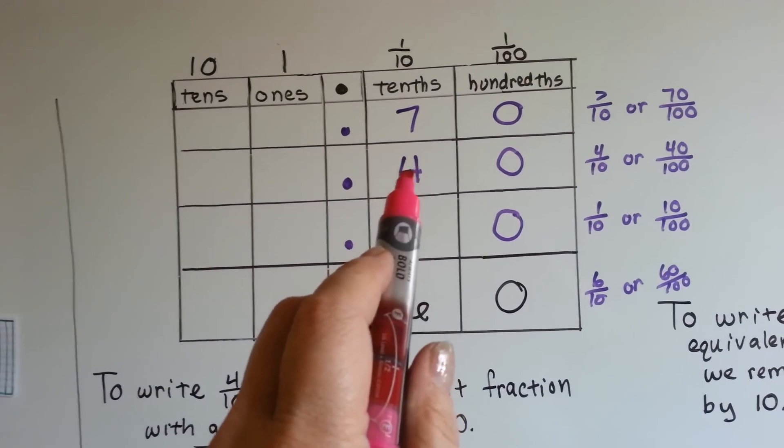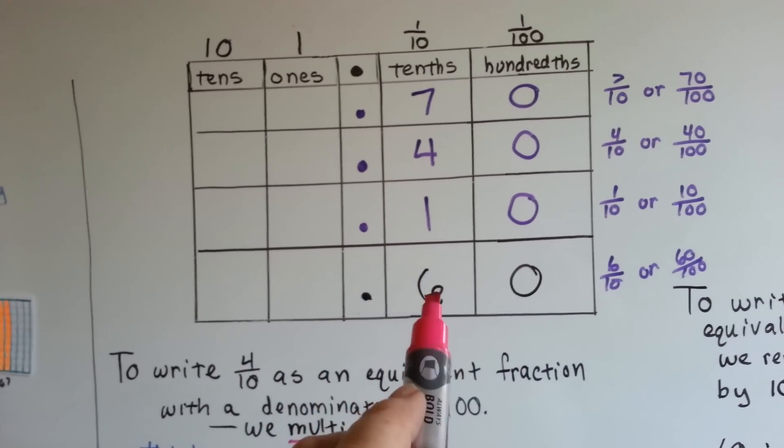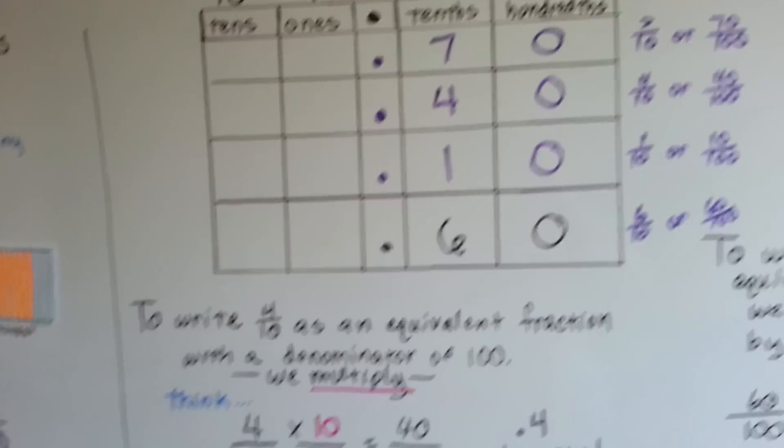Four tenths or forty hundredths. One tenth or ten hundredths. Six tenths or sixty hundredths.